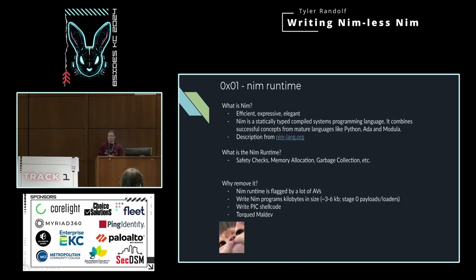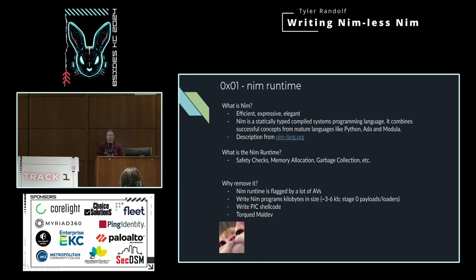What is the Nim runtime? Nim is defined as an efficient, expressive, and elegant language by its creators. It compiles down to C, C++, JavaScript, and a few other languages, but has very readable syntax like Python and is pretty straightforward to understand. It also has a really cool type system since it's statically typed, and it has what are called macros and templates, which are really useful and fun to work with in Nim.